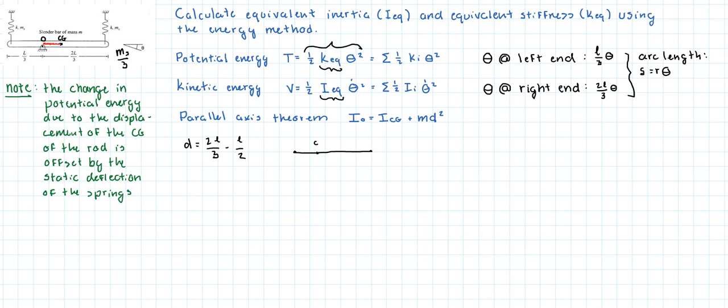I'm going to make a quick diagram. We have where we are rotating, that's 2L over 3, and that's where the center of gravity is at half the distance. So the value for d is 2L over 3 minus L over 2.